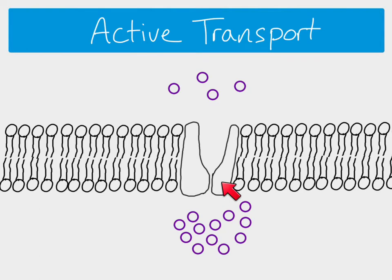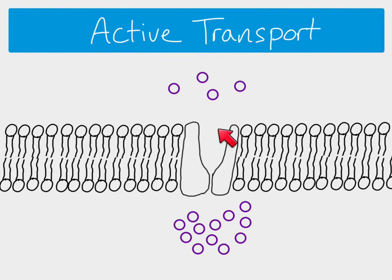To be able to do that, a carrier protein is needed. Here's our carrier protein — it spans all the way across the membrane and it's kind of like a gate. On the side near the area of low concentration it's open, but it's closed on the other side.